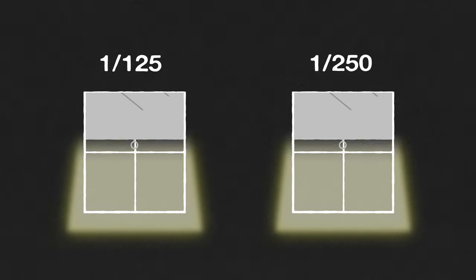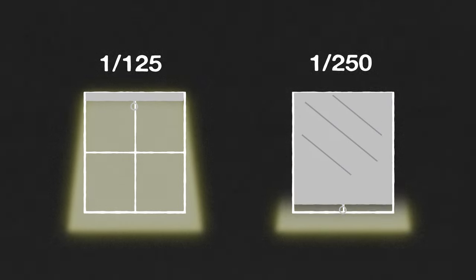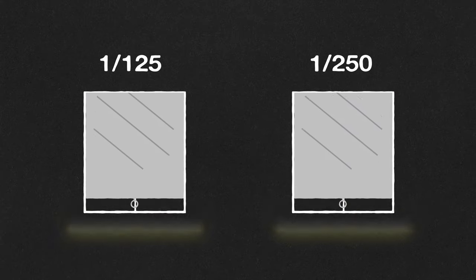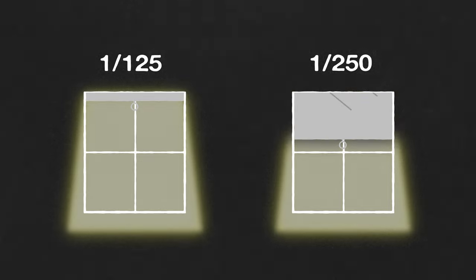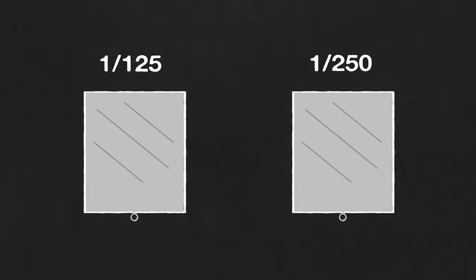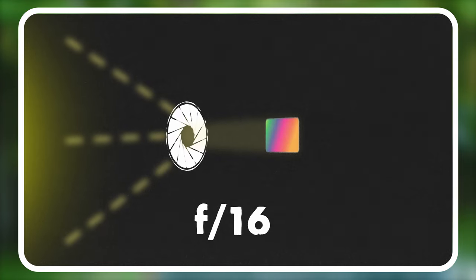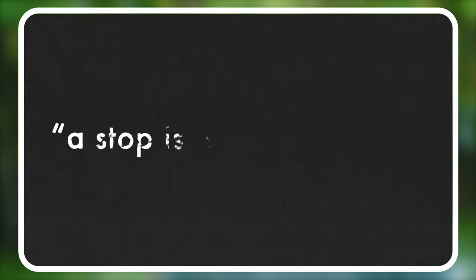At the faster end, you'll dramatically limit the amount of light that hits your sensor. If you go from 125th of a second to a 250th, your shutter is only open half as long — you will have lost what we call one stop of light. When we gain a stop, the amount of light has doubled. When we lose a stop, the amount of light has been cut in half.